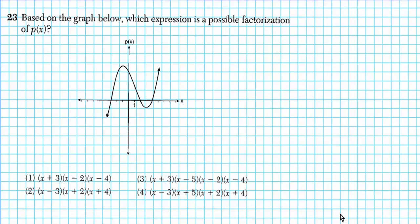Let's take a look at question 23. It says, based on the graph below, which expression is a possible factorization of p(x)? So what does this graph show us? It shows us the zeros. So what are the zeros? This is 1, 2, negative 3. And then we have 2. And then we have 4. So the zeros are x = -3, x = 2, and x = 4.